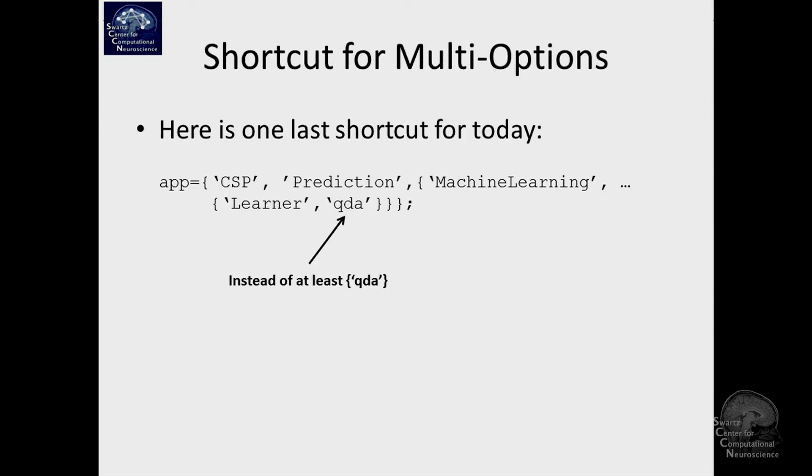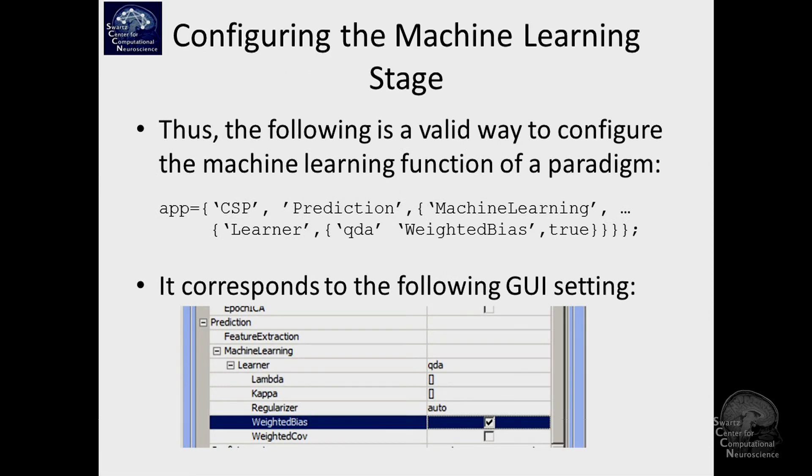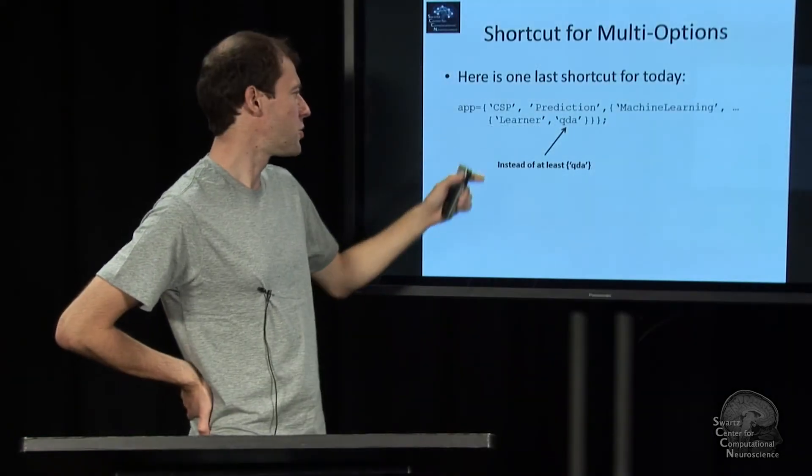There is one more shortcut, and this is in the case of a multi-option parameter. Instead of putting this string into a cell array, you can also omit the cell array. In this case here I say I set the learner argument to QDA and don't overwrite anything else, so I can save myself the cell array and the whole rest. I just put in the string itself because it will know what to do.